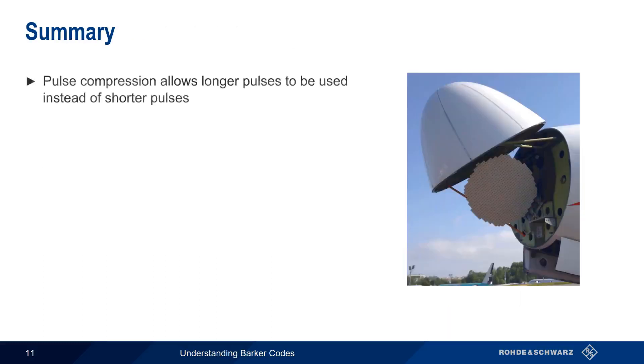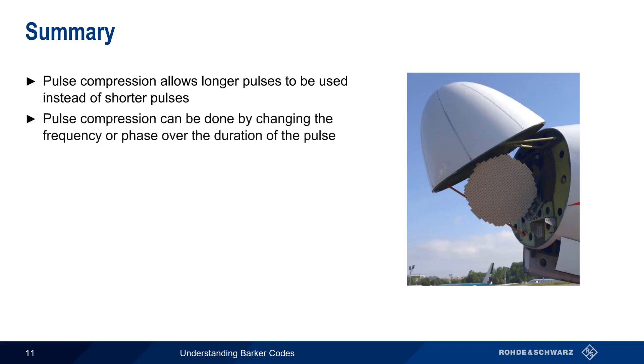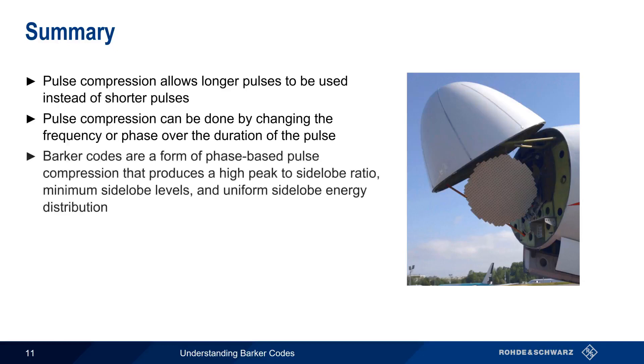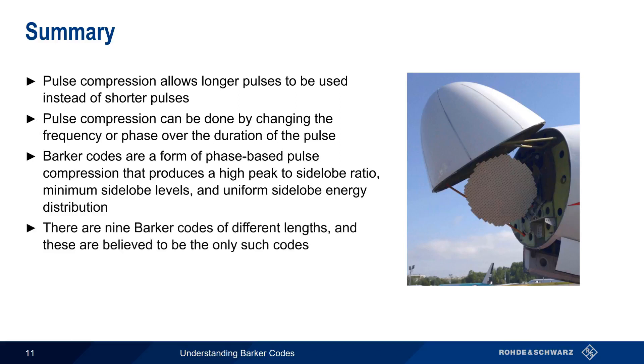So in summary, pulse compression allows radar systems to use longer pulses and still obtain some of the advantages of shorter pulses. This pulse compression usually involves changing the frequency or phase of the pulse as it's being transmitted. Barker codes are one of the most important types of phase-based pulse compression because they yield a high peak to side lobe ratio, minimum side lobe levels, and a uniform distribution of side lobe energy. There are nine total Barker codes of various lengths, and research seems to indicate that there are no additional Barker codes. And lastly, even though we discussed Barker codes in terms of radar applications, they are also used in many non-radar applications as well. This concludes our presentation, Understanding Barker Codes. Thanks for watching.